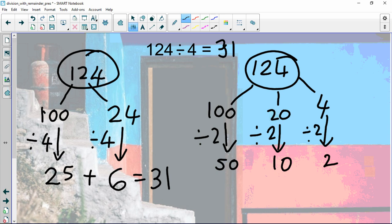We've only divided by 2 so far, we need to divide by 4, so we've got to divide by 2 again. So we're just going to do exactly the same thing again. 50 divided by 2 is 25, 10 divided by 2 is 5, and 2 divided by 2 is 1.